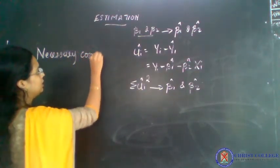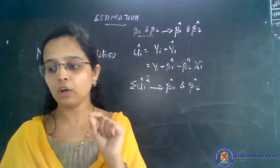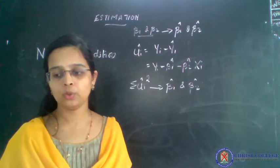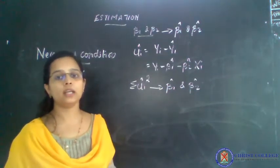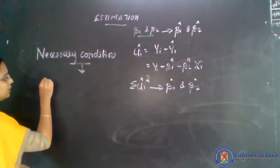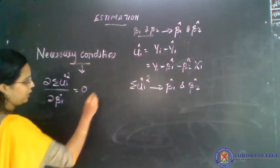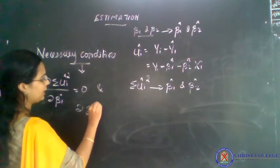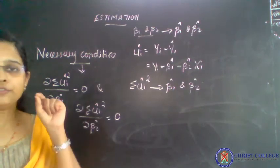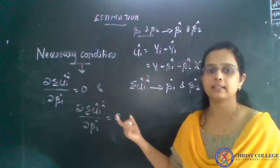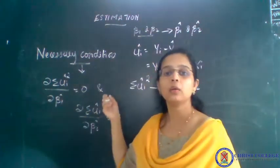The necessary condition in order to determine the values of beta 1 hat and beta 2 hat is that the first derivative of the function is to be kept equal to 0. That means the first derivative of sigma u-hat squared with respect to beta 1 hat and beta 2 hat should be equal to 0. This is the necessary condition, or the first order condition, to find out beta 1 hat and beta 2 hat — the sum of squared error terms with respect to beta 1 hat and beta 2 hat should equal 0.